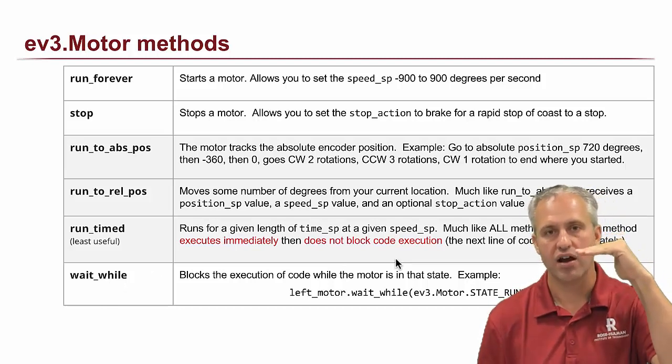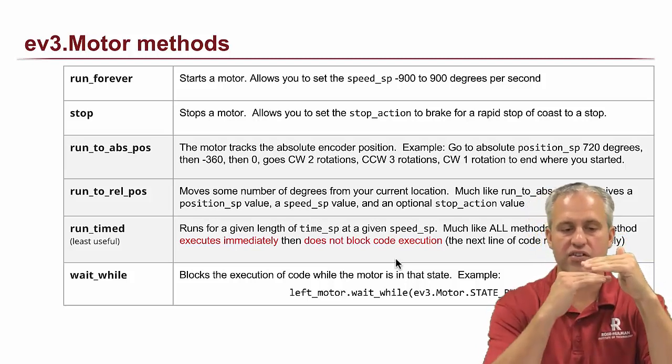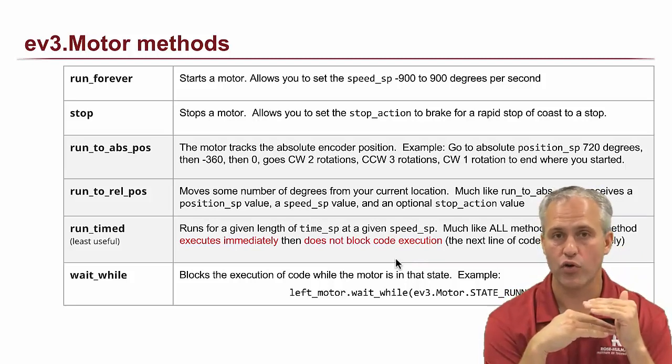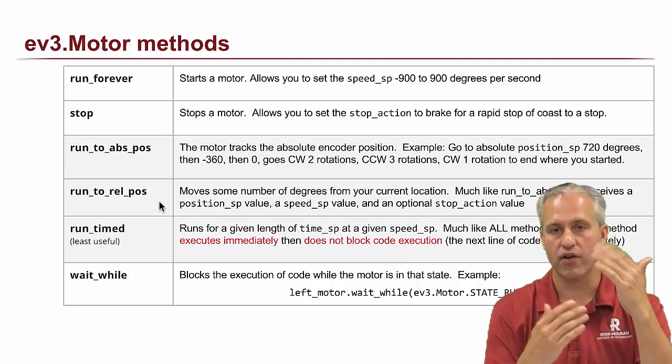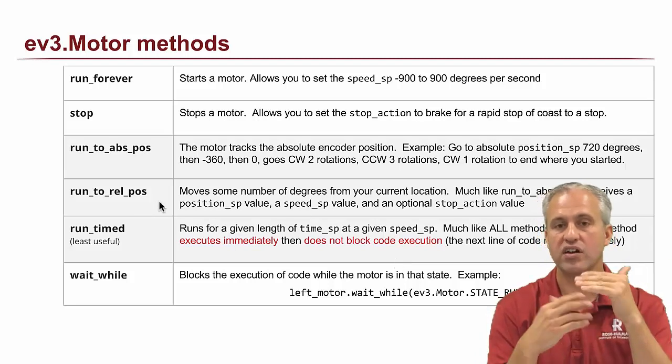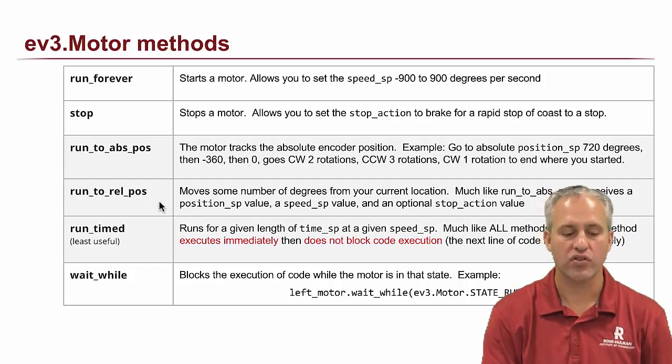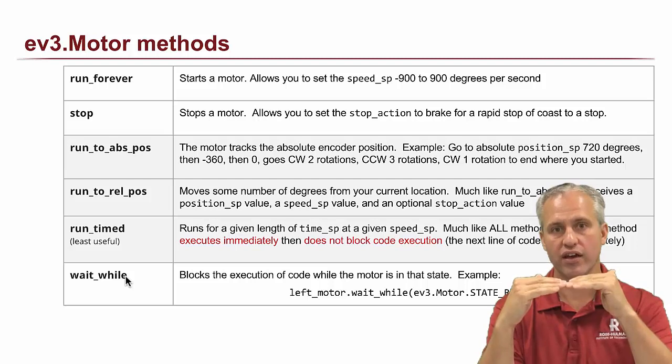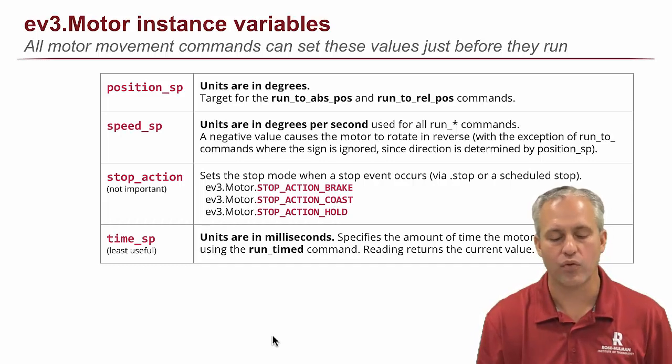So these commands, the way they all work, is they're a line of code that executes. They run instantly, and then the very next instance, the next line of code runs. Code runs faster than robots move, right? So if you say, hey, run to a relative position of 720 degrees, it's going to take a while for that to happen, but your code's going to keep right on chugging, right? And what this wait while does is it lets your code kind of block, so your code blocks until your robot actually finishes the thing, then your code keeps going. So wait while turns out to be very useful. I'll talk more about that here with some examples.